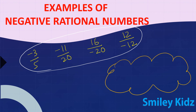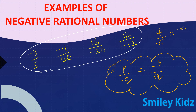Remember, a rational number P by minus Q is expressed as minus P by Q. For example, 4 by minus 5 will be expressed as minus 4 by 5.